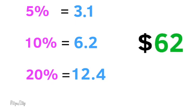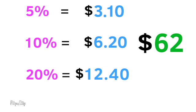If these were 5%, 10%, and 20% tips for a $62 bill, they'd be $3.10, $6.20, and $12.40.